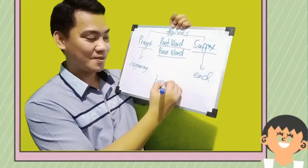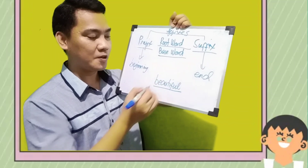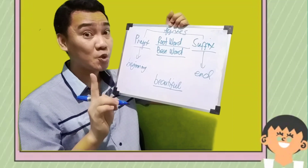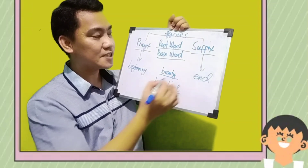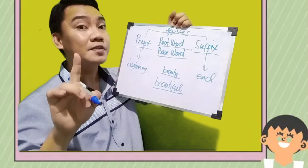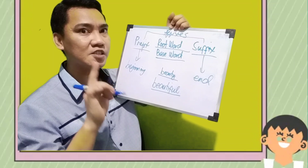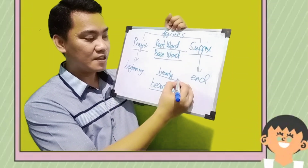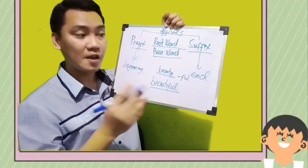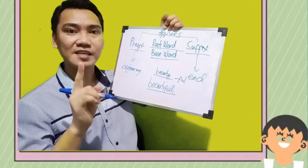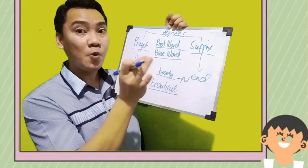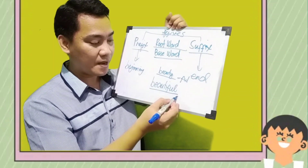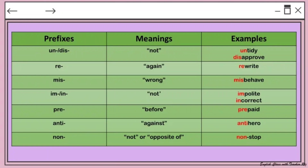For example, if we have the word 'beautiful' — nice word, right — try to find first what is the root word. The root word here is 'beauty.' The affix used is a suffix because we have the suffix '-ful,' making the word 'beautiful.' So beauty combined with the suffix '-ful' becomes 'beautiful.'